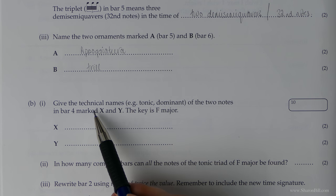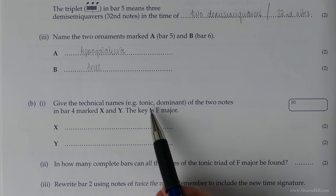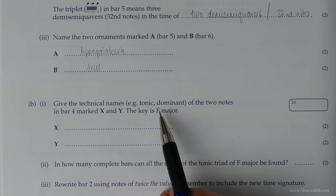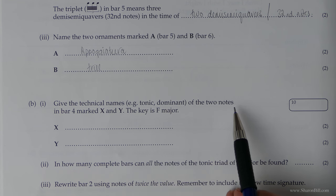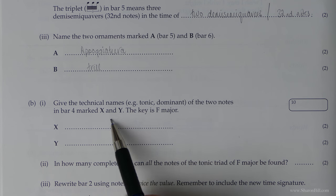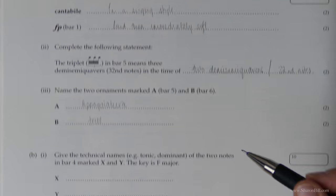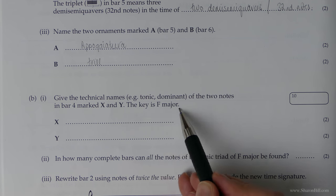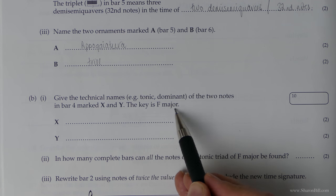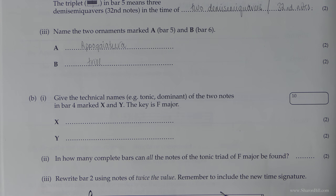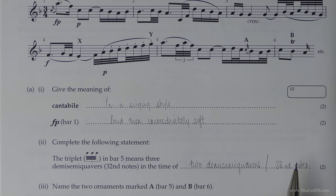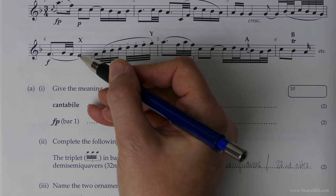Give the technical names. So we're looking for words like tonic, supertonic, median and so on, dominant. Of the two notes in bar 4 marked X and Y. Now very generously they've told us that the key is F major. So we know that F is the tonic. So we need to count the intervals.